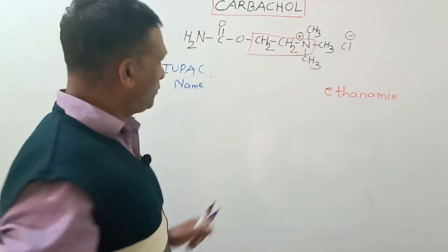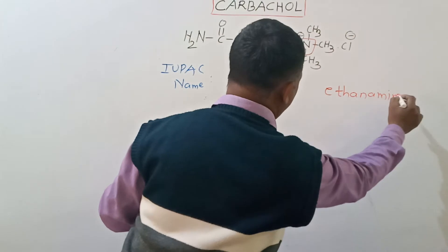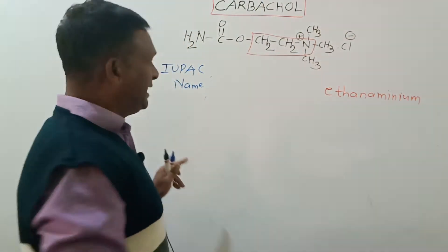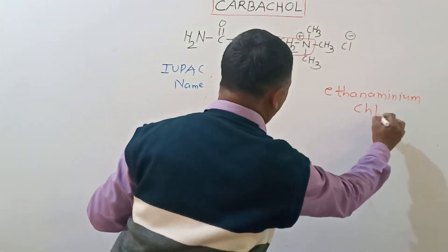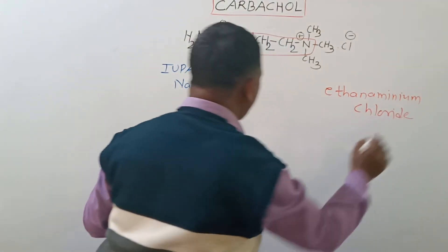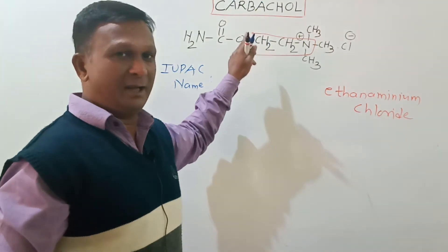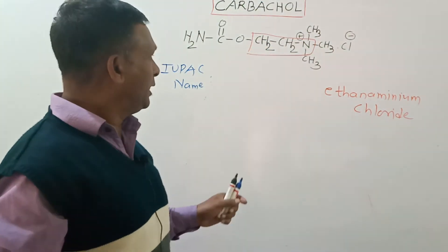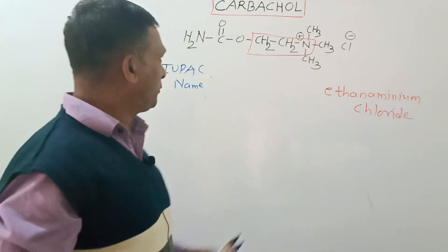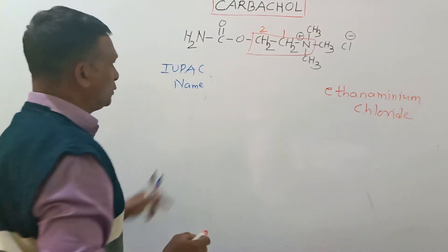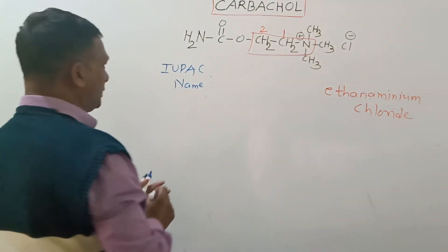Though it is a quaternary nitrogen, we will call it ethane aminium. The counter ion is chloride, so ethane aminium chloride. This will be the basic moiety present in Carbachol. Besides this, we have the substituent groups. This carbon is carbon number one and this is carbon number two.